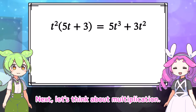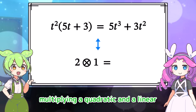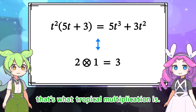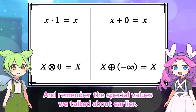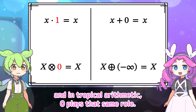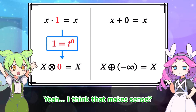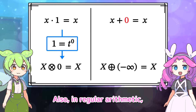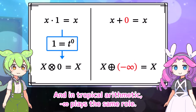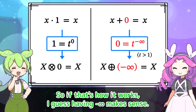Let's think about multiplication. Multiplying a quadratic and a linear in t gives a cubic. In tropical arithmetic, multiplying a quadratic and a linear results in a cubic, because adding 2 and 1 gives 3 in the usual sense — that's what tropical multiplication is. In regular arithmetic, multiplying x by 1 gives x, and in tropical arithmetic 0 plays that same role. If we think of 1 as t to the power of 0, it feels natural that 0 appears as the degree. Also, in regular arithmetic adding 0 gives x, and in tropical arithmetic negative infinity plays the same role — if we think of 0 as t to the negative infinity, negative infinity naturally appears as the degree.